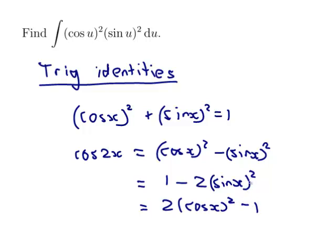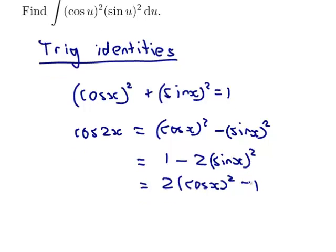I suppose while I'm at it, I should probably write down the trig identity for the double angle formula for sin. sin 2x would be 2 sin x cos x.